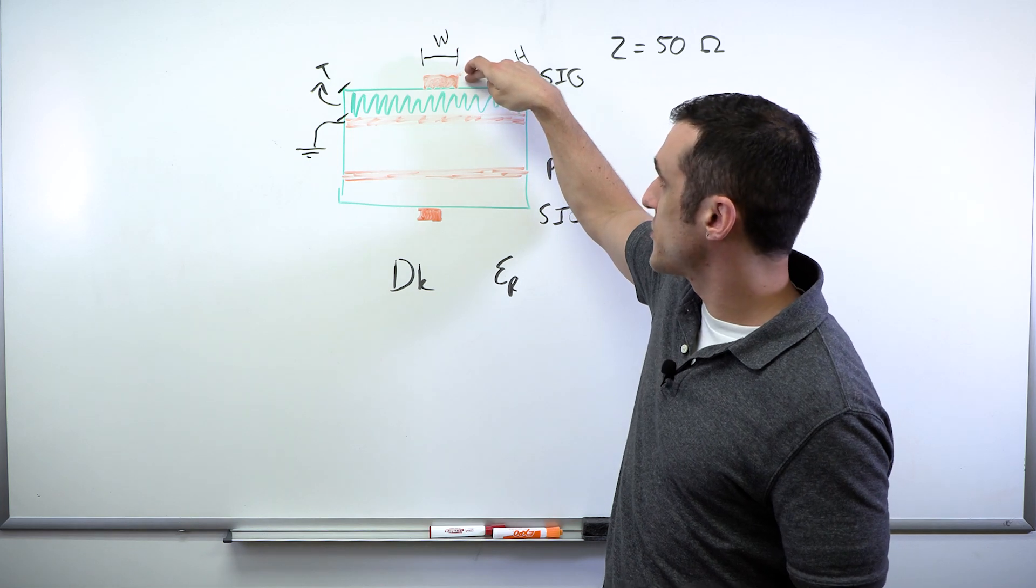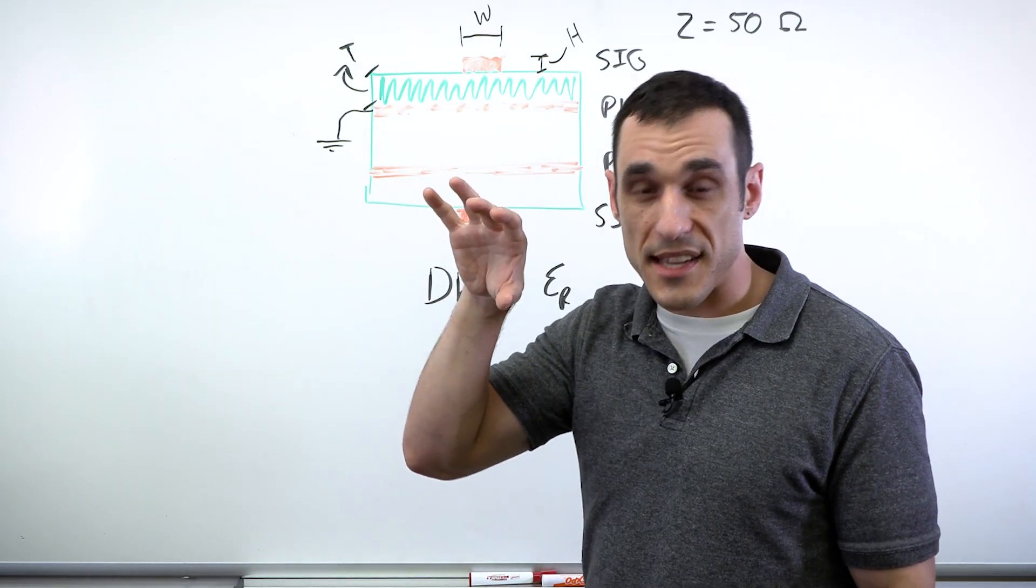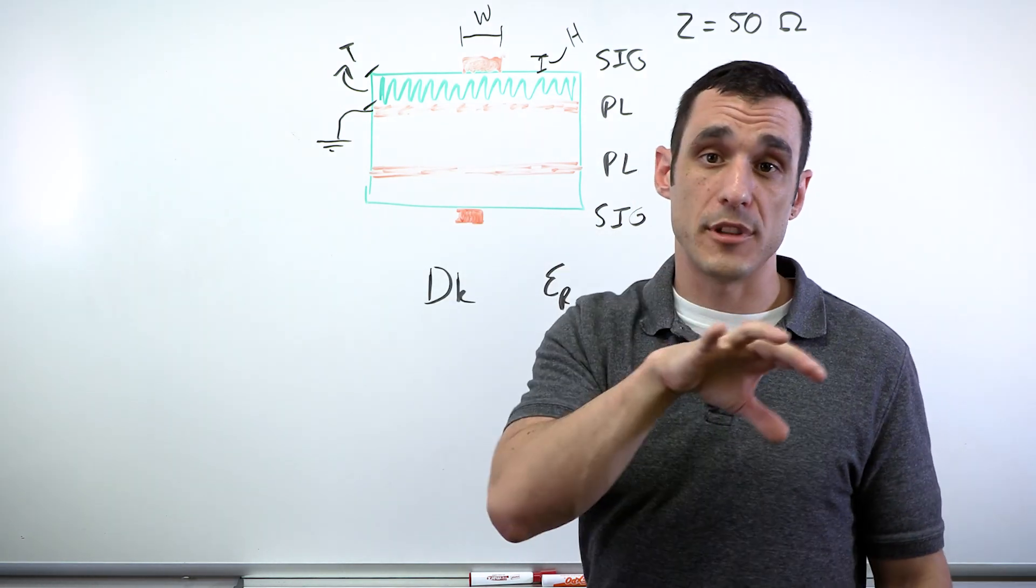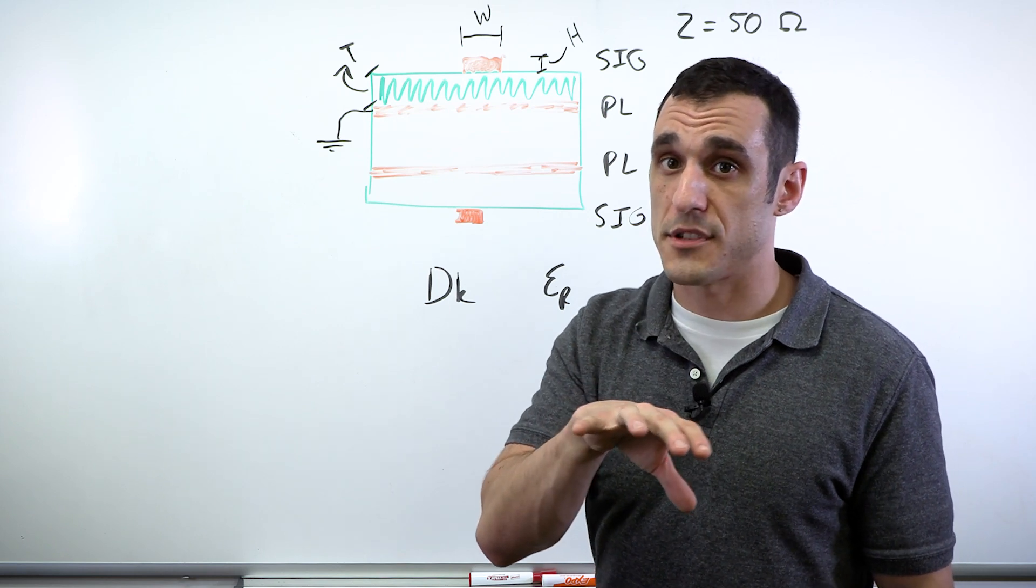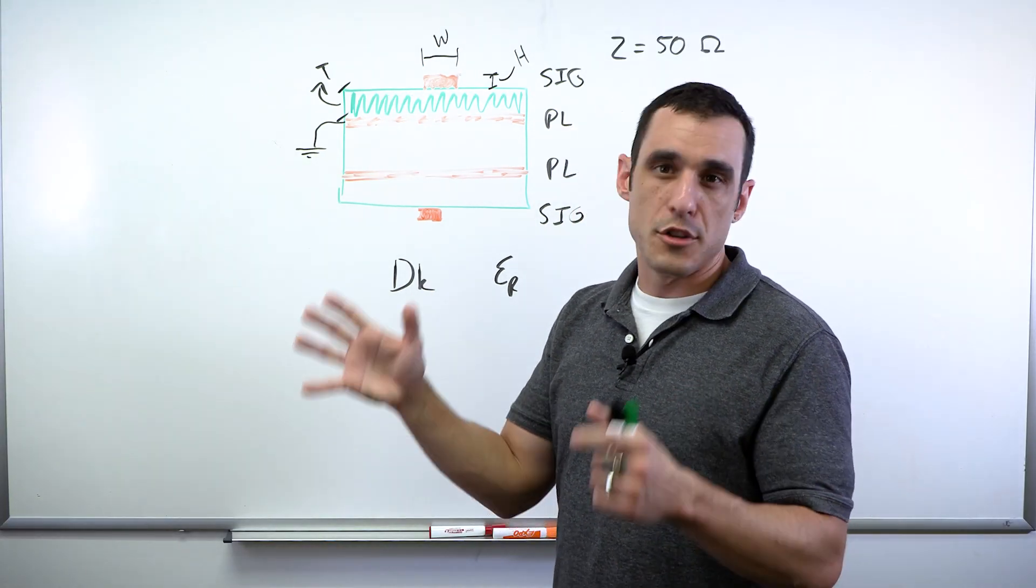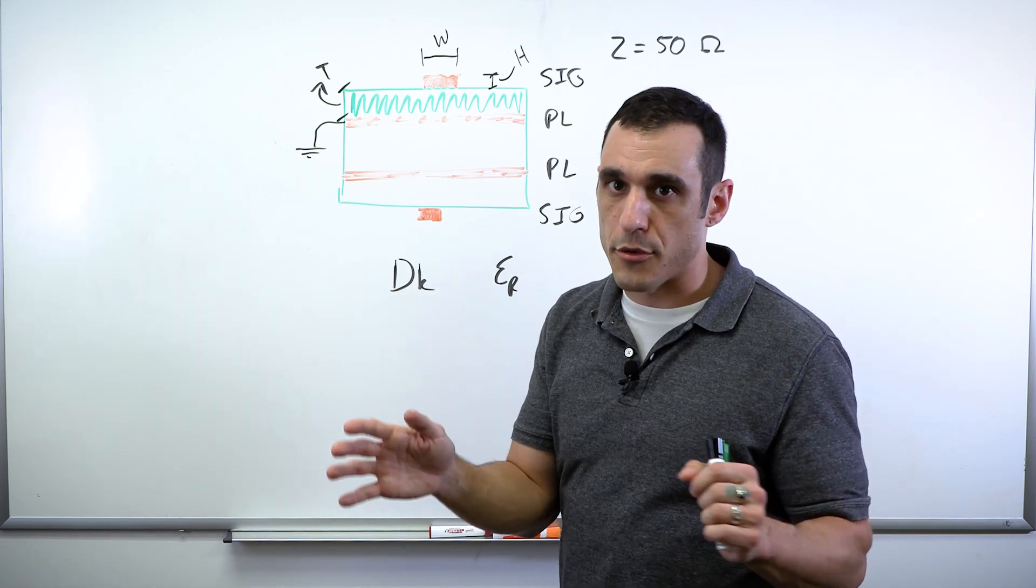So for these micro strips up on this surface layer, that textbook has a formula for the trace impedance that is actually known to be more accurate than the trace impedance formula that's in the 2141 standards. Now within a certain frequency range up to about a gigahertz, the two formulas are actually very close to each other.